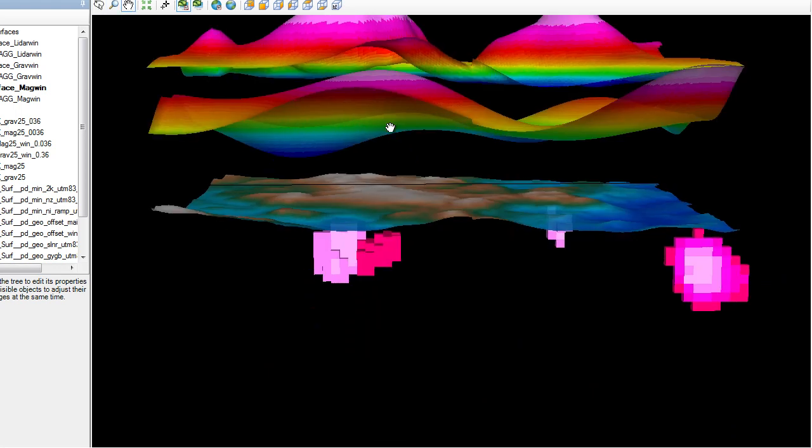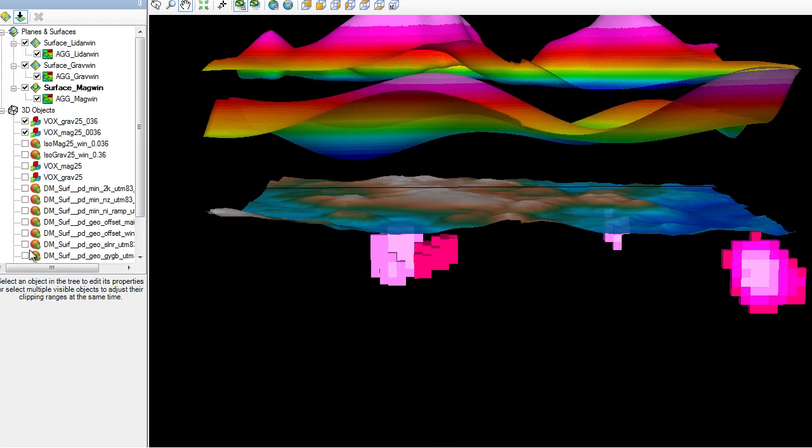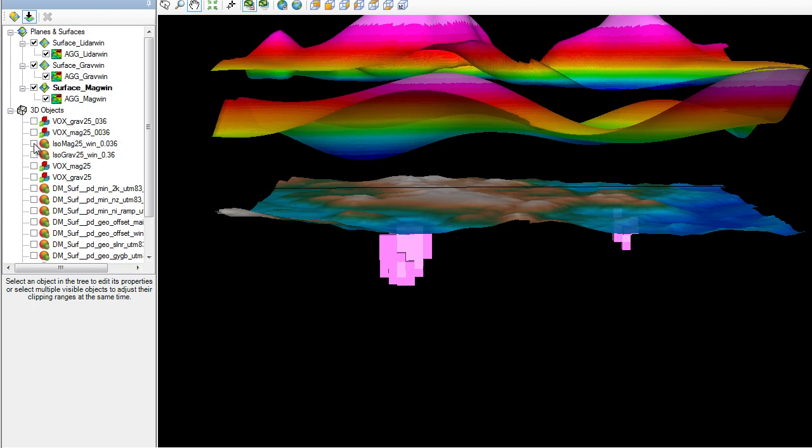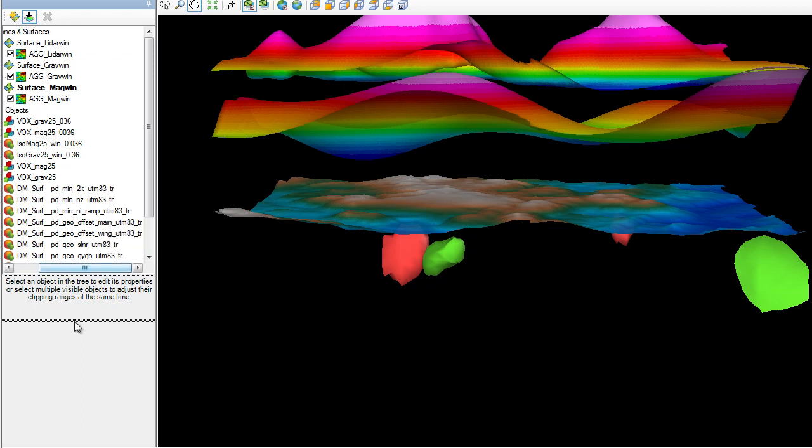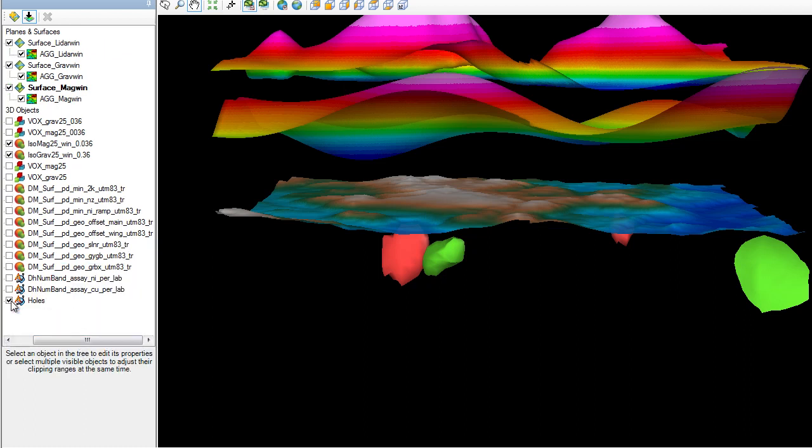Let's look what happens in the earth volume. I will turn off the voxelized high susceptibility areas and show them with isosurfaces. The orange isosurface is actually the high susceptibility and the green isosurface represents the high density area.